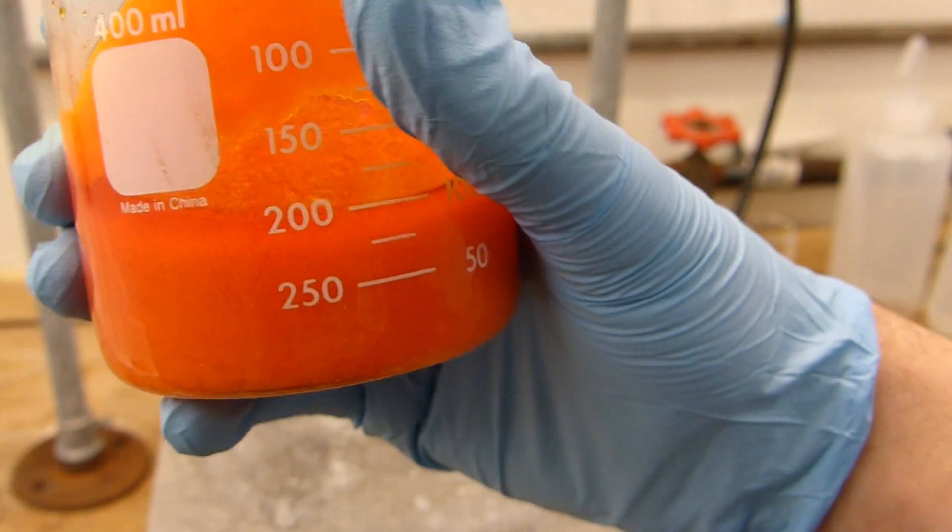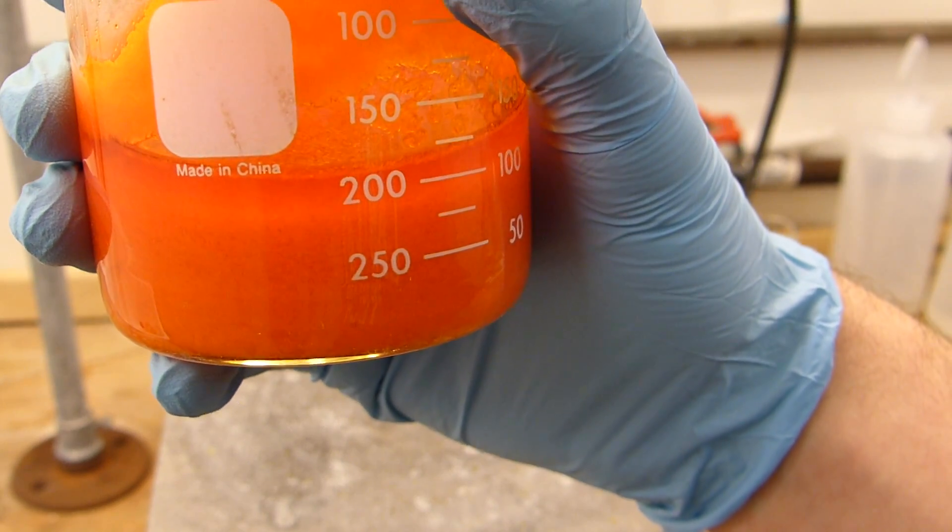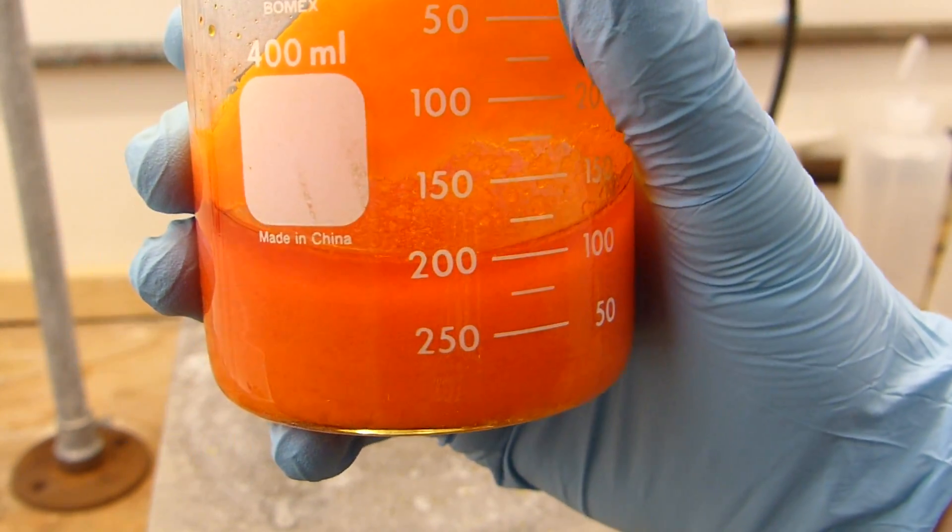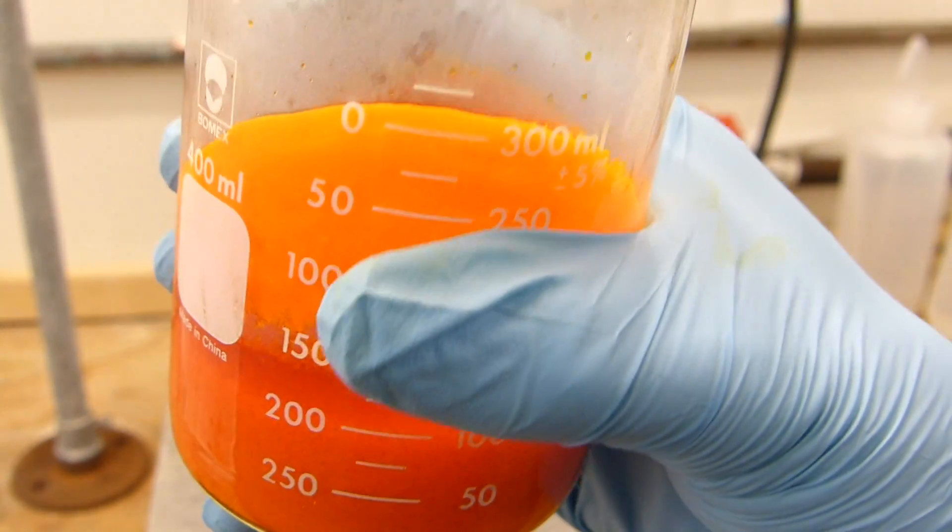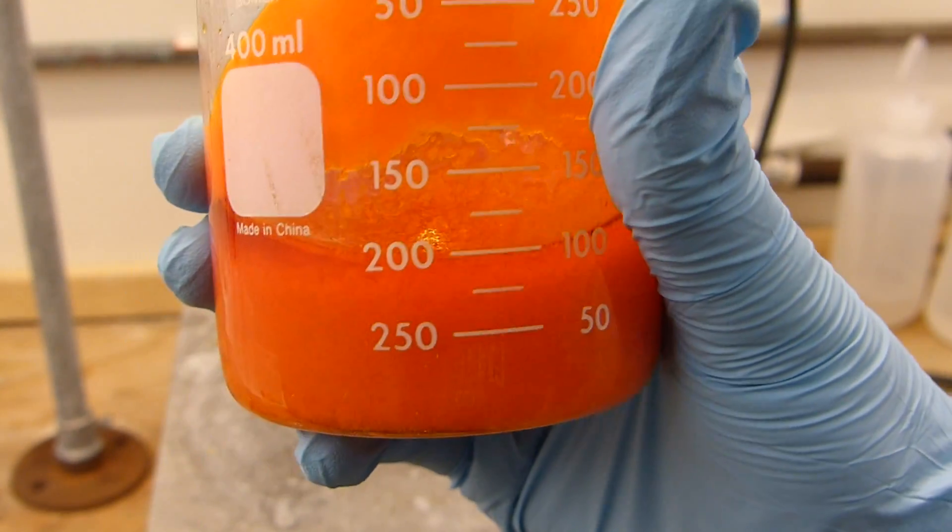So what's going to happen is I'll stick this in the fridge or the freezer for that matter to precipitate as much of the pyridinium chlorochromate as possible and then we can go ahead and filter off the product and then dry it.